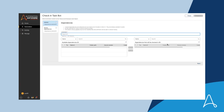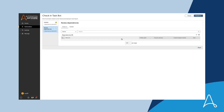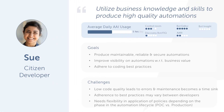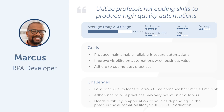Sue now checks in the automation file successfully as it has no code analysis violations. She now knows that her automation code meets the code quality standards set by Marcus. As a citizen developer, Sue has used her knowledge of the business process to submit her automation. Marcus ensures that the automation is reviewed and made ready for production by an experienced professional developer who is held to higher coding standards with policies that are more stringent and check for more complex coding practices.